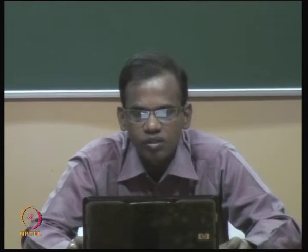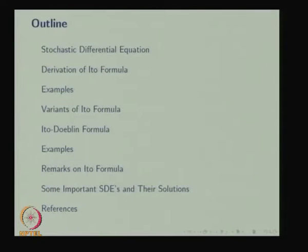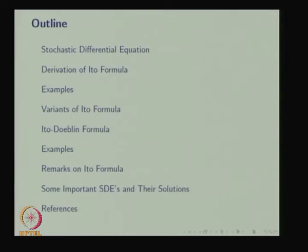In Lecture 5, we are going to discuss the derivation of the Itô Formula, followed by a few examples. Then we will discuss the variants of the Itô formula — in particular, the Itô–Doeblin formula — and give two or three examples, followed by remarks on the Itô formula. In the next lecture, we will discuss some important SDEs and their solutions.